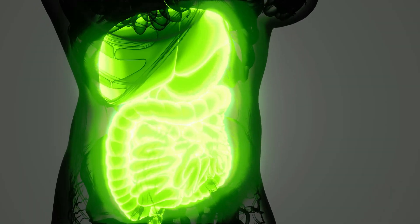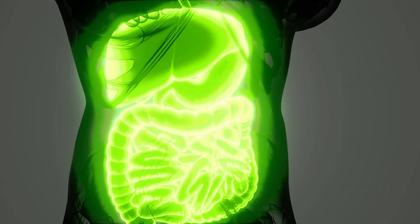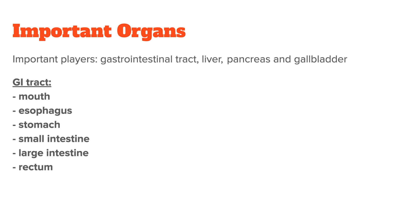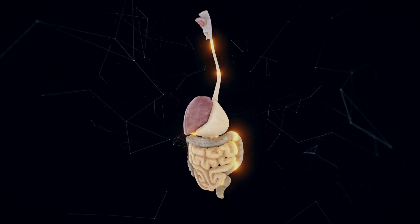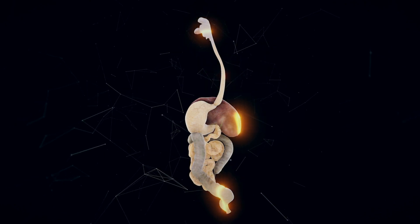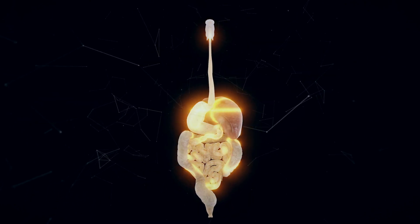Here are the most important players in your digestive system. It is comprised of the gastrointestinal tract, along with the liver, pancreas, and gallbladder. The organs that make up the GI tract include the mouth, esophagus, stomach, small intestine, large intestine, and rectum. Together, your digestive system helps to move food and liquid through your GI tract, break it down, and later absorb it.